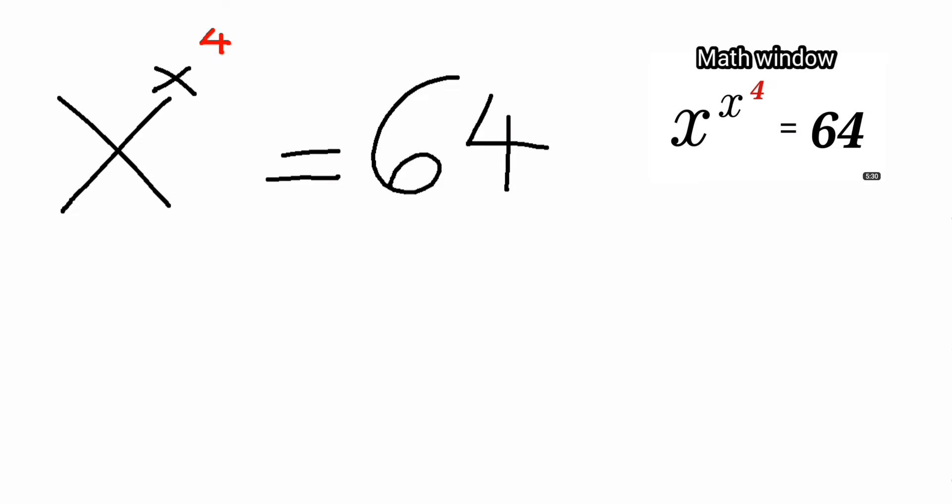Hi guys, welcome back to Junior Scenario Subject. This particular question was solved by a YouTuber, so we want to solve it in a simplified manner. We have x raised to the power of x raised to the power of 4, all of them is equal to 64.